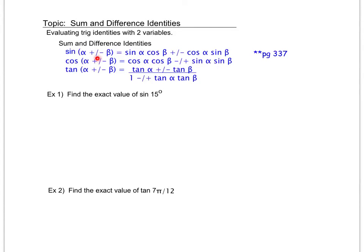With cosine, when I'm adding them I subtract, so first goes with first. When I'm subtracting those variables I add these two expressions. With tangent, when I start with adding I go ahead and add these two terms on top and subtract these two terms on the bottom. When I have subtraction between my two variables I subtract on top and add on the bottom. If that's confusing, please copy down on page 337 each of the individual formulas instead of using my condensed formula set here.